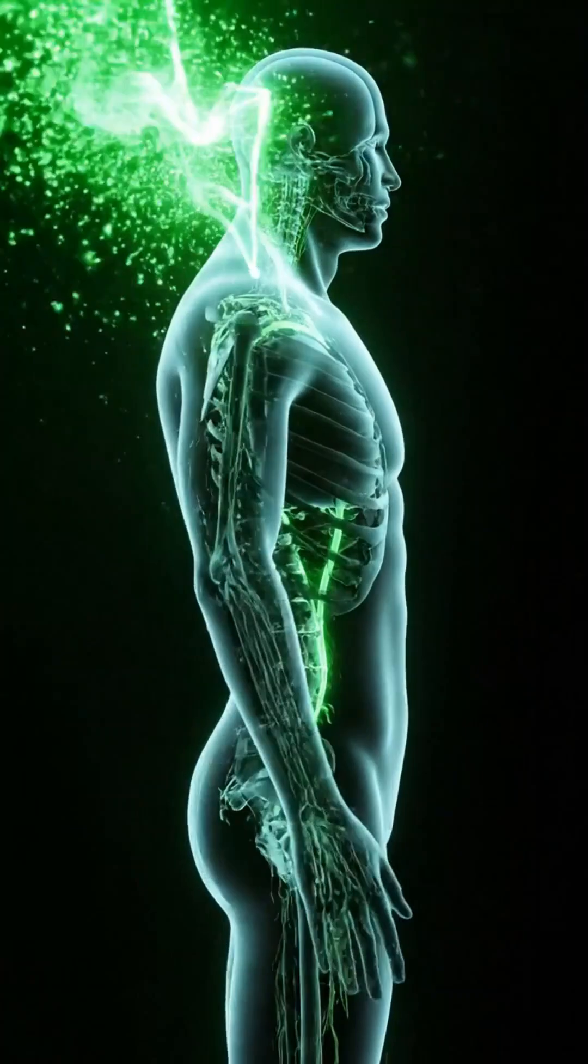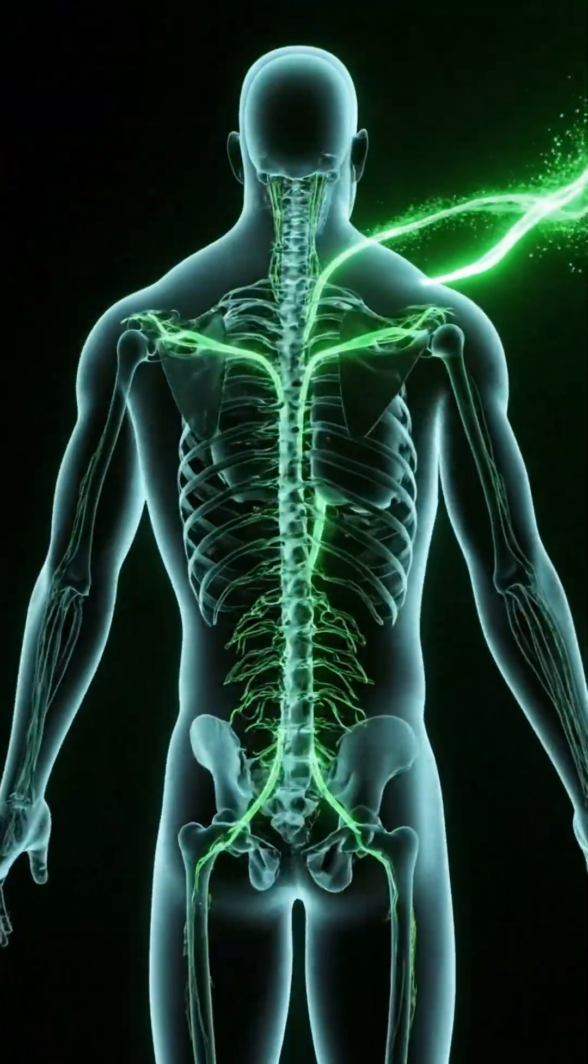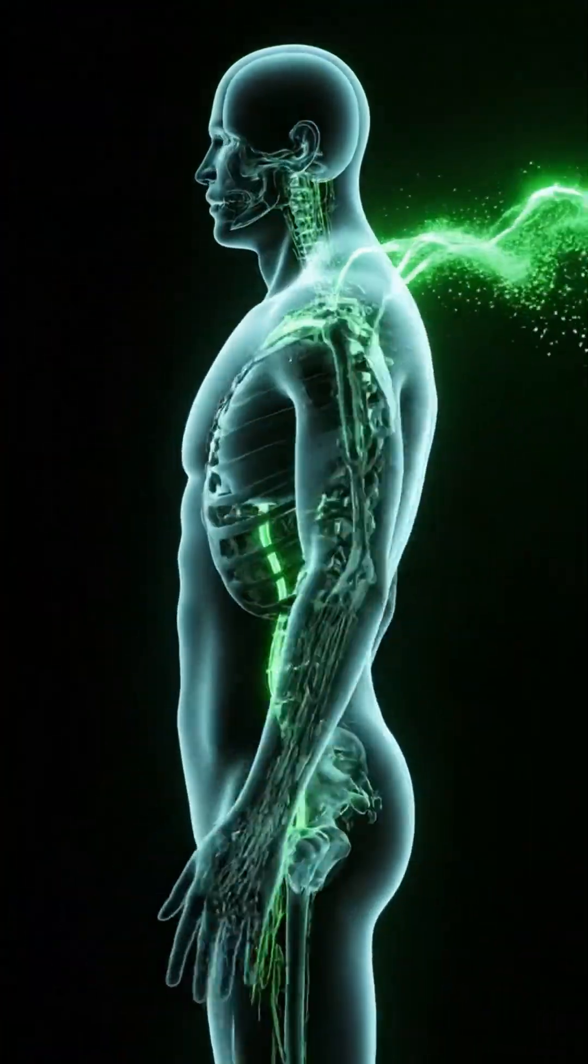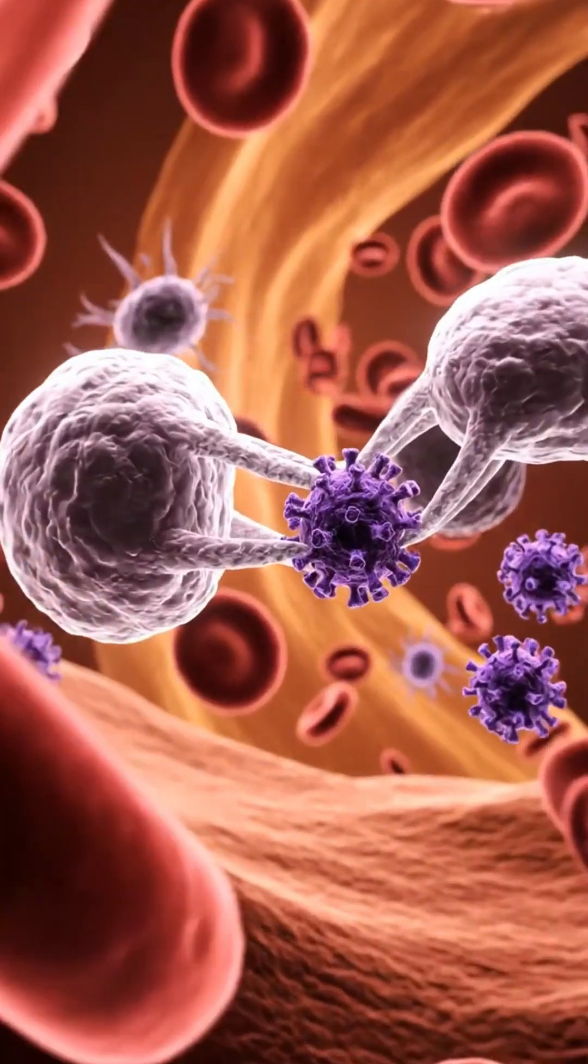Viewed whole, the lymphatic system is a glowing web of defense and drainage, balancing fluids while coordinating immunity across the body.